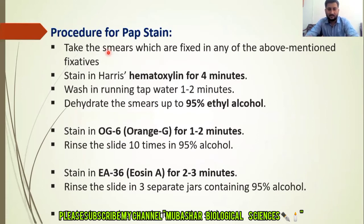After making the smear, we fix it using one of the three fixation techniques discussed. After fixation, we dip the smear in Hematoxylin stain for four minutes. After dipping, we wash the smear with tap water for one to two minutes. Then we dehydrate it using 95% ethyl alcohol. The second stain used is OG-6 (Orange G), in which the smear is kept for one to two minutes.